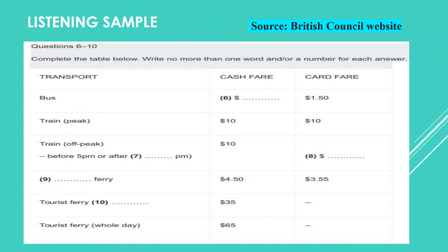The recording for this sample question is a telephone conversation between a clerk at the inquiry desk of a transport company and a man who is asking for travel information. You are required to fill in the missing information about the cost of fares for bus and train journeys from Bayswater to Harbour City. You will have a short time to prepare before the speaker begins talking. Use this time to familiarize yourself with the question and focus your mind on what you need to listen out for.